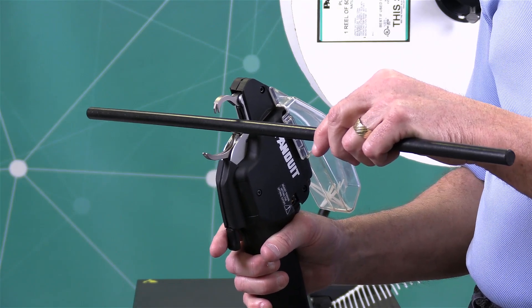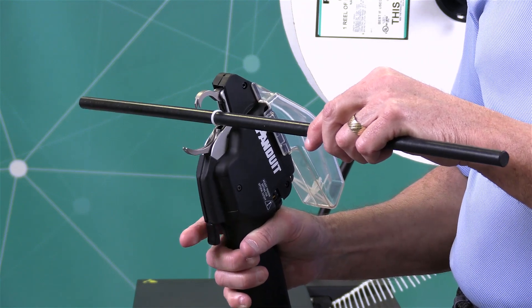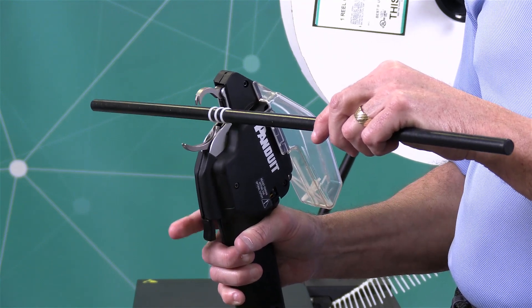Now you're ready to use the tool. All you need to do is press the rear jaw handle trigger closed and hold it until it completes the cycle.